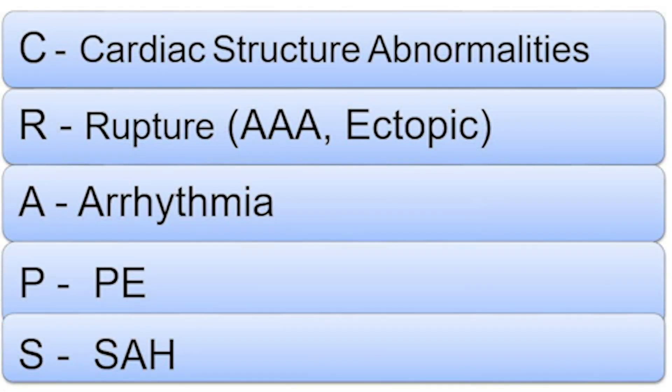We would be remiss talking about syncope if we didn't start with the differential. We've done a podcast on this — it's episode three. Dr. Patrick uses the mnemonic 'Don't CRAPS': C is cardiac structure abnormalities, R is rupture — AAA or ectopic bleeding, A is arrhythmia, P is pulmonary embolism, and S is subarachnoid hemorrhage.